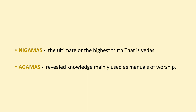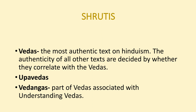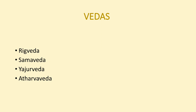Agamas contain the revealed knowledge, mainly used as manuals of worship. Vedas, Upavedas, and Vedangas constitute the Shruti. The Vedas are the most authentic texts of Hinduism. The authenticity of other texts is determined by whether they correlate with the Vedas or not. Vedangas are a part of the Vedas associated with understanding the Vedas.